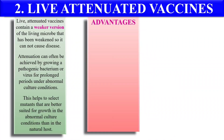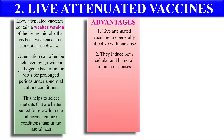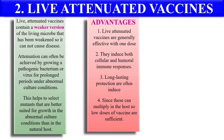Advantages of live attenuated vaccines: they are very effective because they contain the live version of the pathogen, generally effective in a single dose. They induce both cellular as well as humoral immune response. Their response is also long-lasting, providing very long-lasting immunity. And since they can multiply inside the host, a low dose of these live attenuated vaccines is sufficient for boosting immunity.